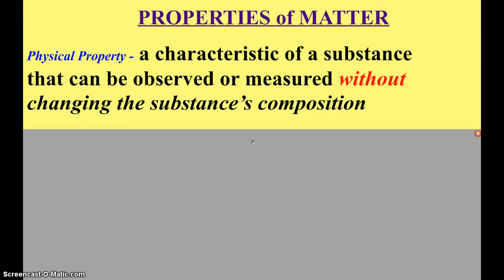We have talked about the different states of matter and the changes they can undergo. So now we're going to start looking at properties of matter. A physical property is a characteristic of a substance that can be observed or measured without changing the substance's composition.